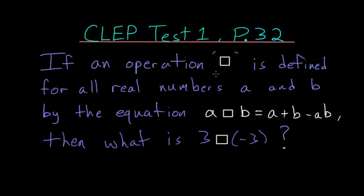If an operation □ is defined for all real numbers a and b by the equation a□b = a + b - ab, then what is 3□(-3)?